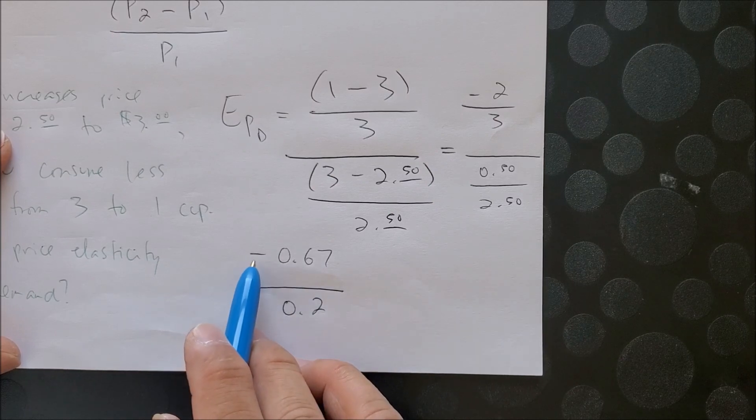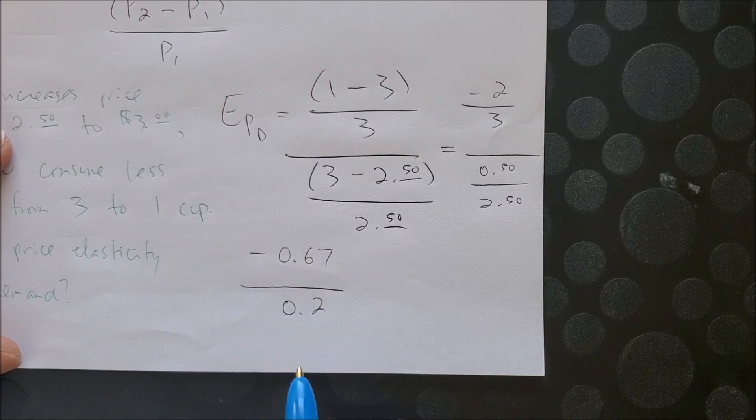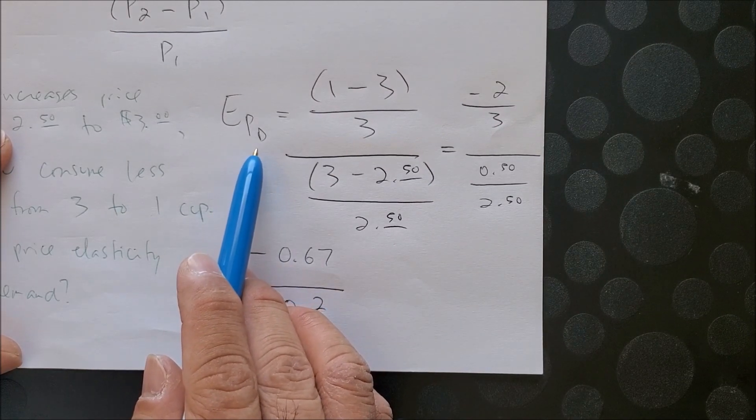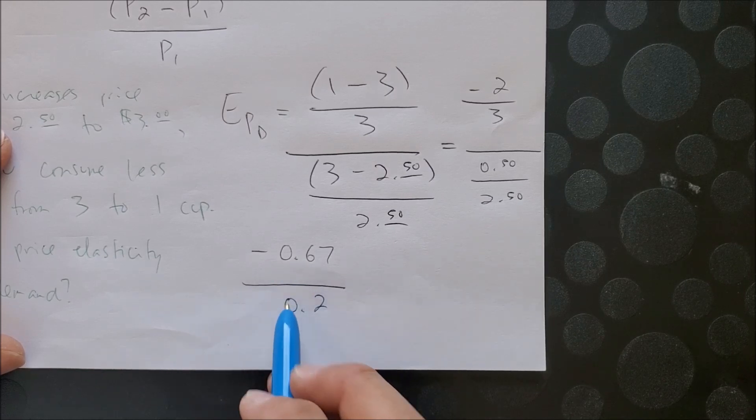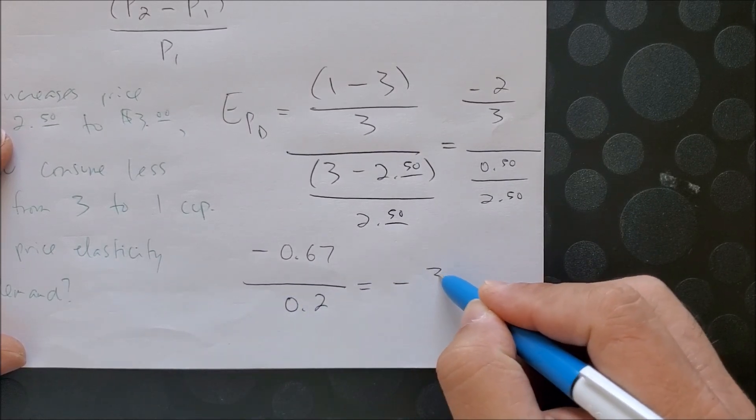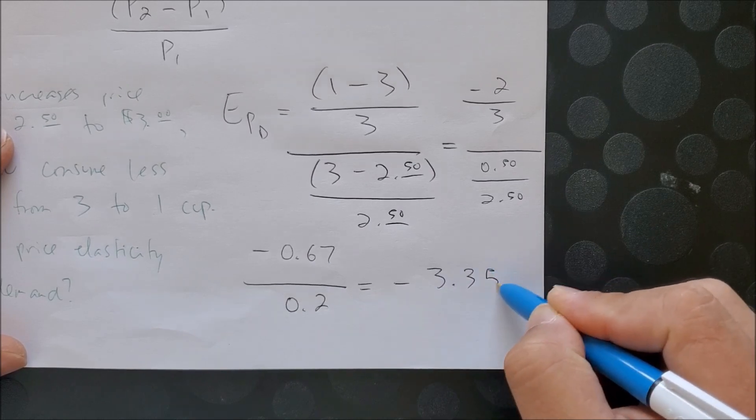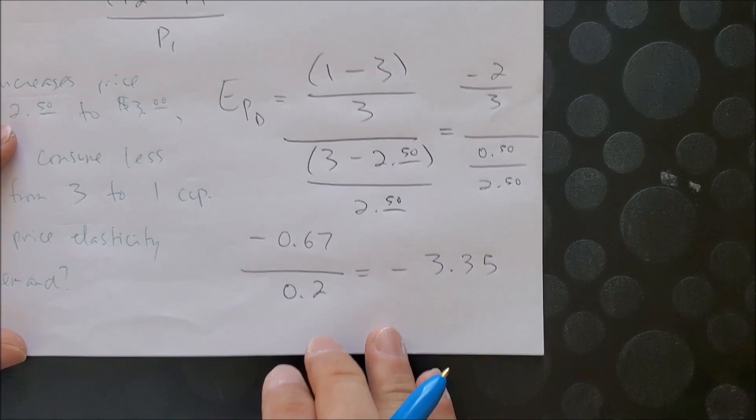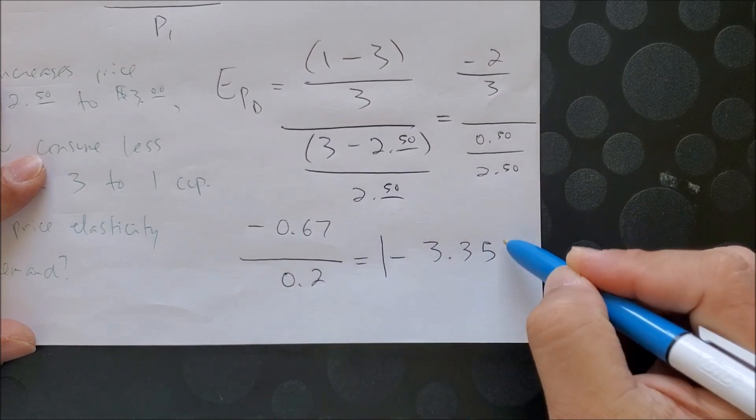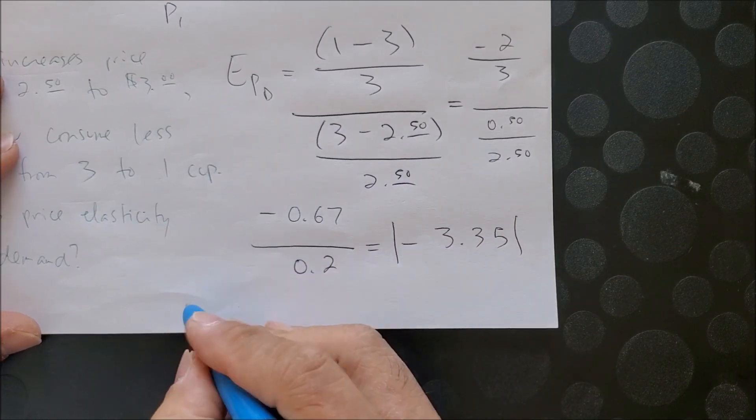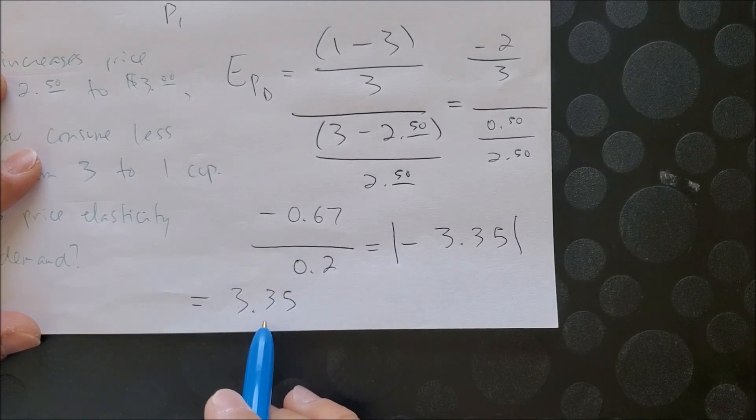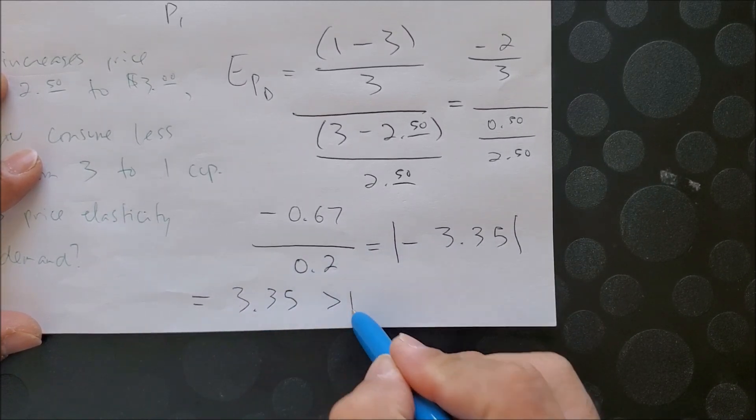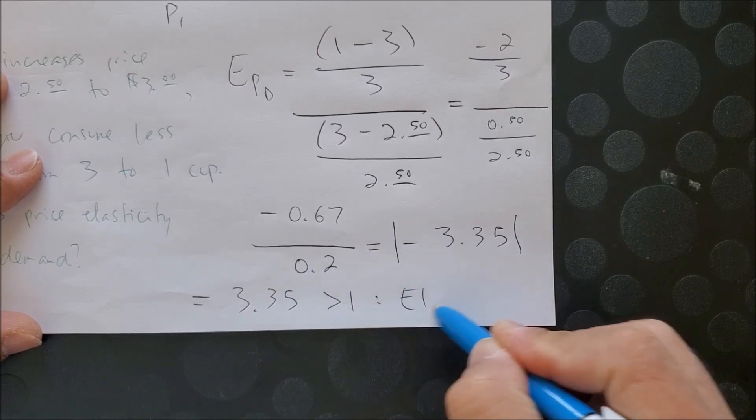So notice that we have a negative sign, which tells us once again that we are working with demand, because both price and quantity have an inverse relationship. And once we calculate these two numbers, we're bound to get negative 3.35. And because this is demand, we have to take the absolute value to get a final answer of 3.35. And this number is greater than 1, so it is elastic.